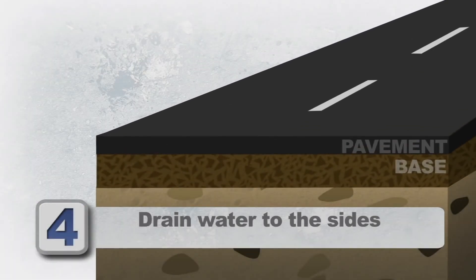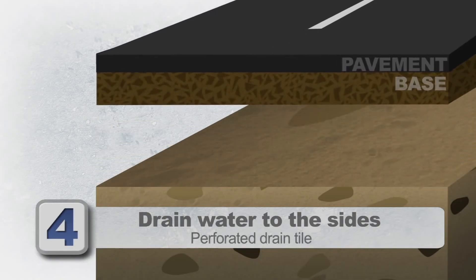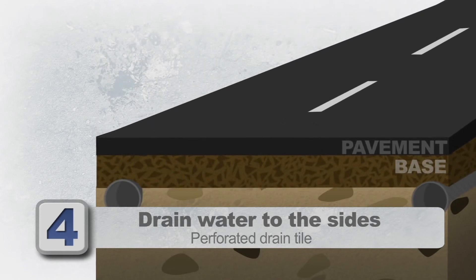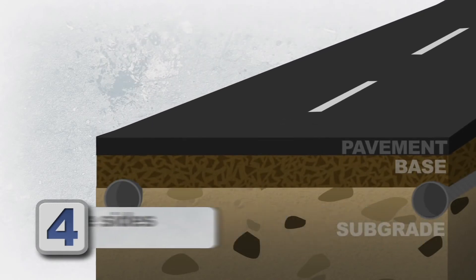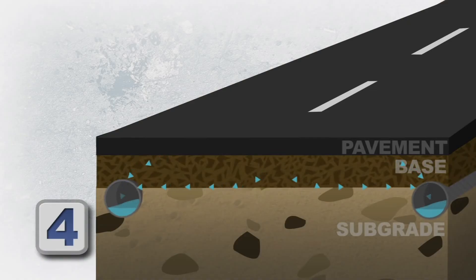Yet another way to move water to the sides of a pavement structure is to install perforated drain tile at the outer edges of an excavated subgrade. If the fines content of the base is not too high, gravity will drain water into the tile.